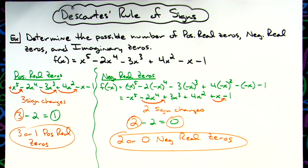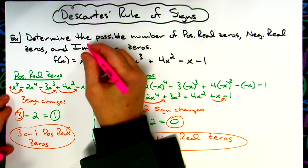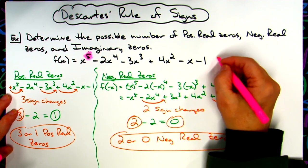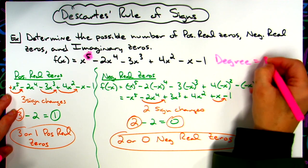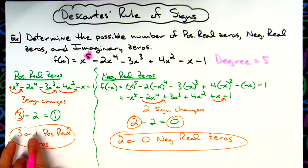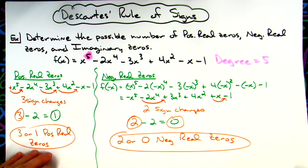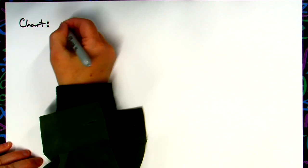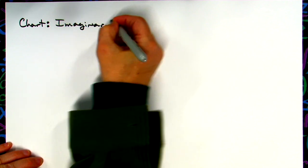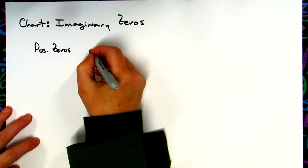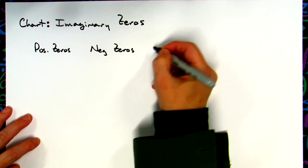Now for the imaginary zeros, we're going to construct a little chart. We need to remember what we've just found and know the degree of the original function. Since it's in standard form, I can just look at the beginning term. The degree of this original function is five. I'll use the fact that I found three or one positive real zeros and two or zero negative real zeros. Let's write our chart out with a column for positive zeros, a column for negative zeros, and a column for imaginary zeros.